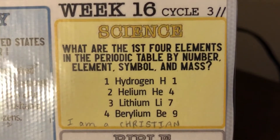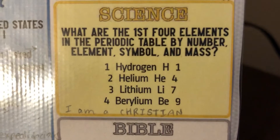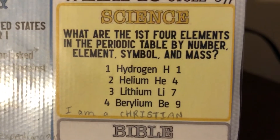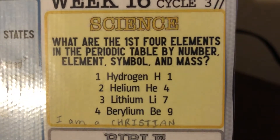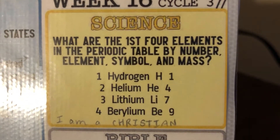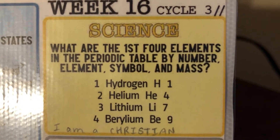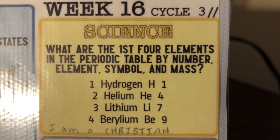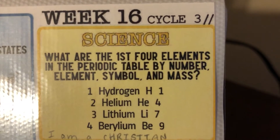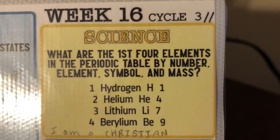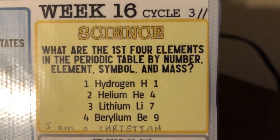CC Cycle 3, Week 16 Science: What are the first four elements in the periodic table by number, element symbol, and mass? Sung to the tune of 'I Am a Christian.'